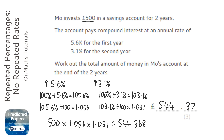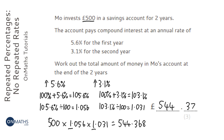Some of you might be thinking: don't we need to add on the extra 500 pounds each time we work out 5.6% or 3.1%? These multipliers ensure that the answer we have is the total answer, already including the original 500 pounds.